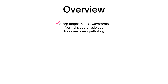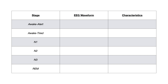Now let's talk about normal sleep physiology. I'm going to fill in a chart - I think it's the easiest way to approach this information and form a conceptualization. We've already talked about the sleep stages and their EEG waveforms, so I'll fill those in for completeness. For awake alert and awake tired there's not much to know beyond beta and alpha waves. For N1, you need to know that this is the lightest stage of sleep.